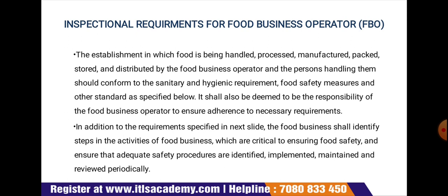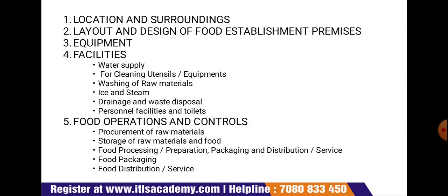In addition to the specified requirements, the food business shall identify steps in its activities which are critical to ensuring food safety and ensure that adequate safety procedures are identified, implemented, maintained, and reviewed periodically. The first inspection area is location and surroundings.